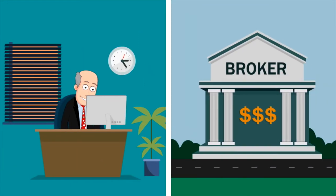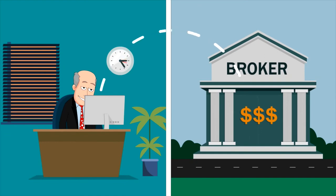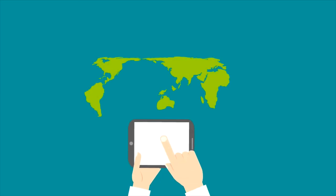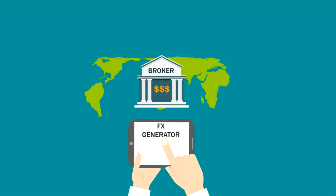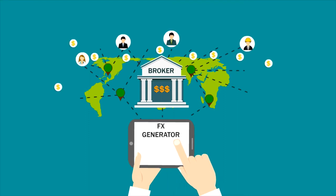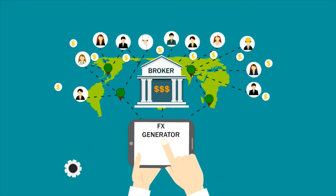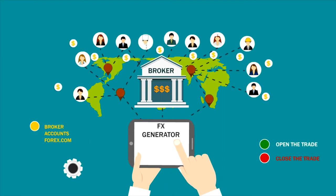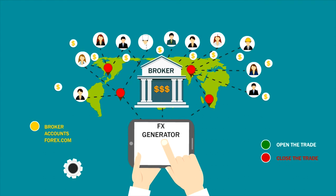So, as the expert trader places his trade on his brokerage platform, the information sent to the broker is called a signal. As this signal leaves the expert trader's trading platform, it is duplicated and then also sent to every customer's broker who has a subscription with the FX Generator. The broker then places and exits the trades for all accounts based on the signals.